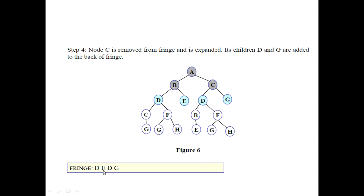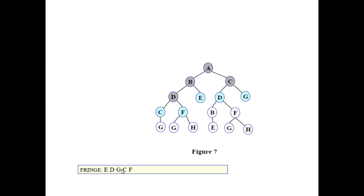Then we will pick the very first node of this fringe, that is D. We will expand it and find the successors of this D, that is C and F. These C and F will again be placed after G. The new fringe list will have E, D, G, then C and F. As you can see in the next diagram, C and F is being placed over here.